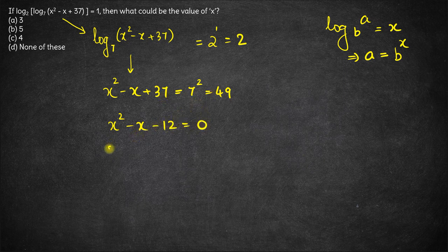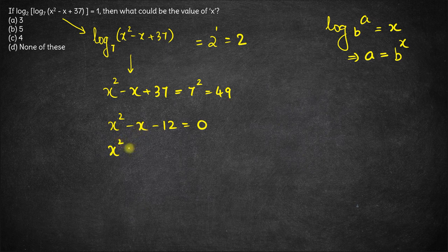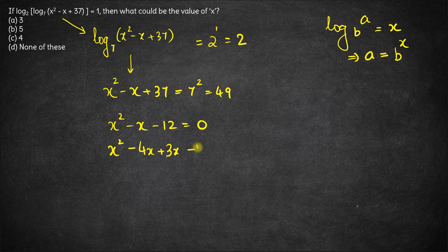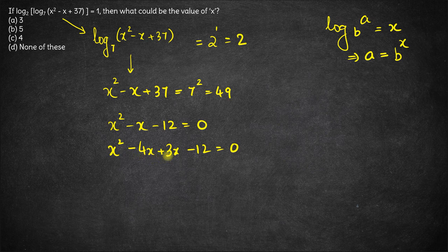Now we can split the middle term as minus 4x plus 3x minus 12 equals 0. The two terms when we split are minus 4 and plus 3. Minus 4 plus 3 is minus 1, and minus 4 times plus 3 is minus 12.